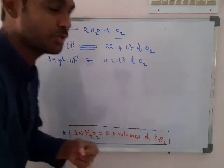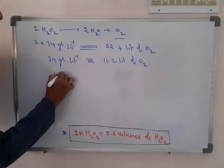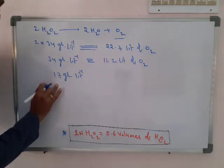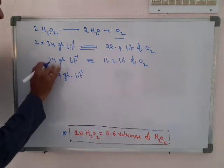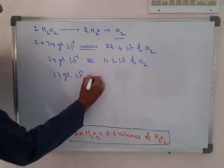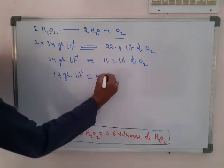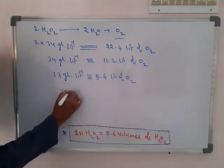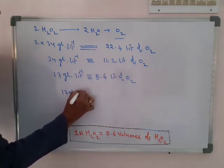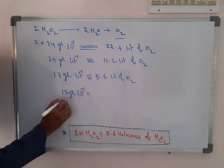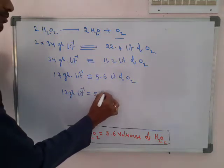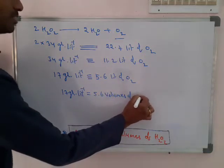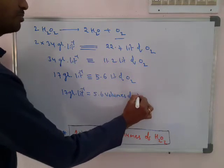The equivalent weight equals molecular weight divided by n-factor: 34 ÷ 2 = 17 grams. So one normality means 17 grams per liter, and that gives 5.6 liters of oxygen. Therefore 17 grams per liter is also called 5.6 volumes of hydrogen peroxide. A hydrogen peroxide sample releasing 5.6 volumes means it is one normality, equal to 17 grams per liter.